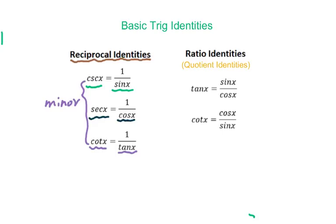The second very important trig identity is called ratio identities or quotient identities. We use sine and cosine to express tangent. Tangent x equals sine x over cosine x. Cotangent x equals cosine x over sine x.